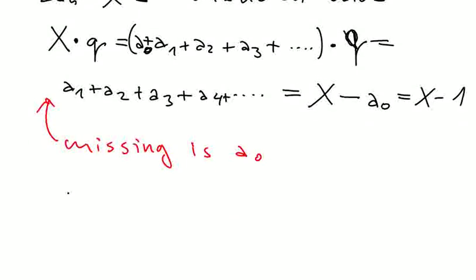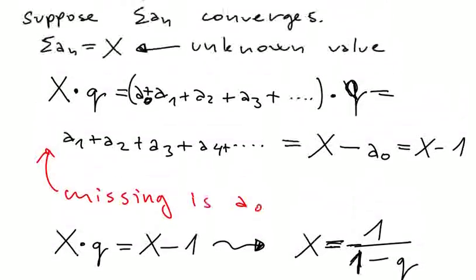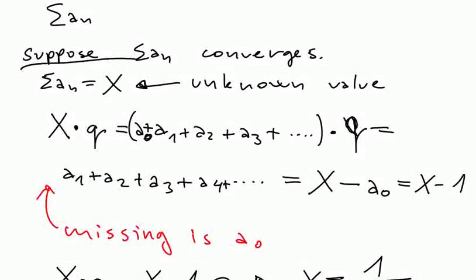So the only thing which is missing here is a₀. But it's not very difficult to see what this is. This is nothing else than x minus a₀, meaning x minus 1. So we derive that x times q is equal to x minus 1. Or in other words, if we put x on one side, then we will have 1 over 1 minus q. So we derive that sum of this series is 1 over 1 minus q, which is true if the series converges. So if we would know for which values of q it converges...